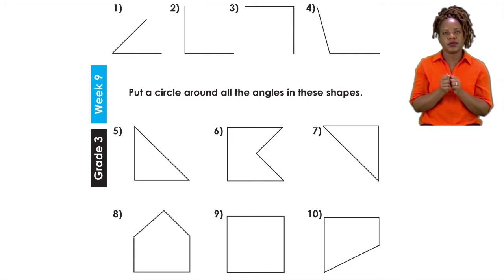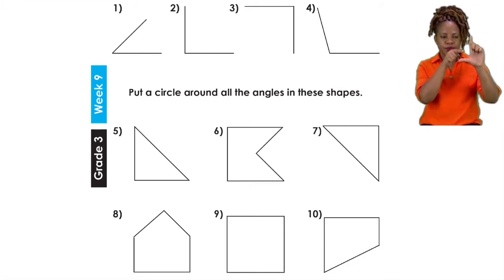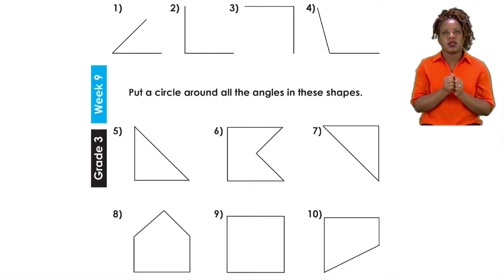As you can see, we have number one up to number four, so we need to look for the right angles. Now right angle can either be on top or at the bottom. It's going to be your job to take all the correct right angles. Remember, if the line is going inside, then it is not a right angle, or if it is protruding outside, it is also not a right angle. After that, you're going to put a circle around all the angles in these shapes.